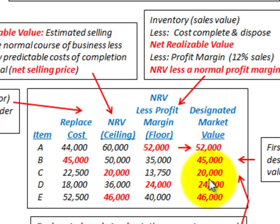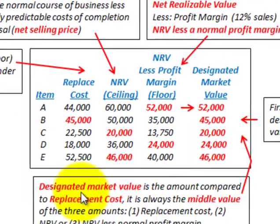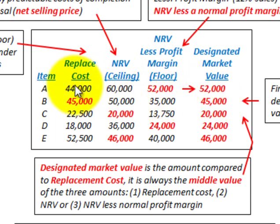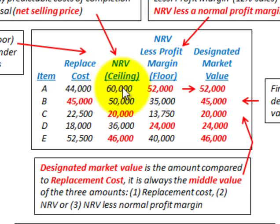Next, we have to determine the designated market value. The designated market value is compared to cost, and it's always the middle value of three amounts: the replacement cost, the net realizable value (ceiling), and the net realizable value less the normal profit margin (floor). So the designated market value is always the middle value between the high and low for each item. For item A, the middle value is $52,000 — the high is $60,000 and the low is $44,000, so the middle is $52,000.